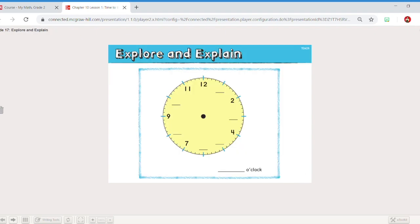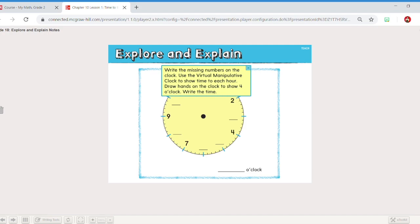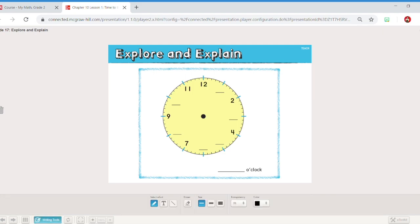So on your explore and explain today, we're going to be filling in the missing parts of the clock. Use the virtual manipulative clock to show the time to each hour. Draw the hands to show four o'clock and write the time. We've got to find those missing numbers in our clock which again works kind of like a timeline where twelve is our interesting start point but the twelve can also represent zero. So we have one, two, three, four, five, six, seven, eight, nine. Oh it tricked me. Nine is already written for us. So nine, ten and it wants us to draw four o'clock.